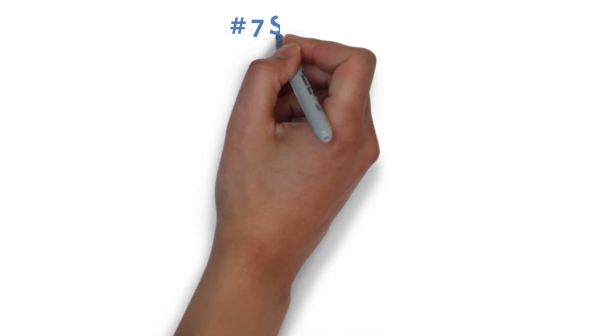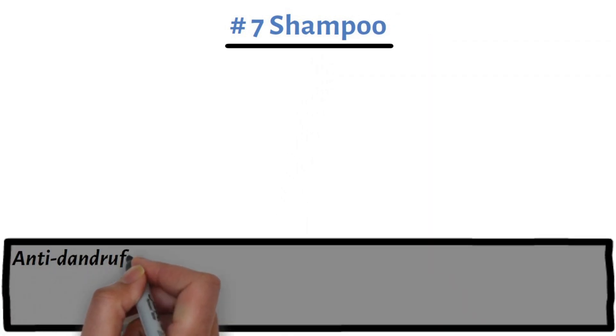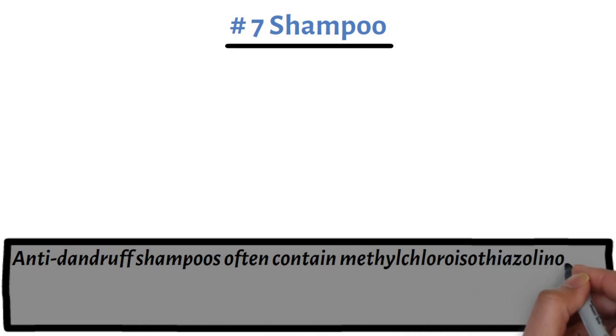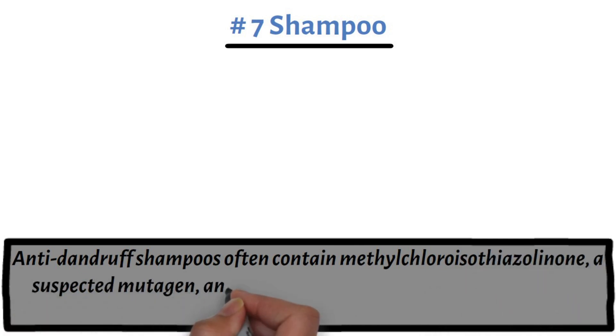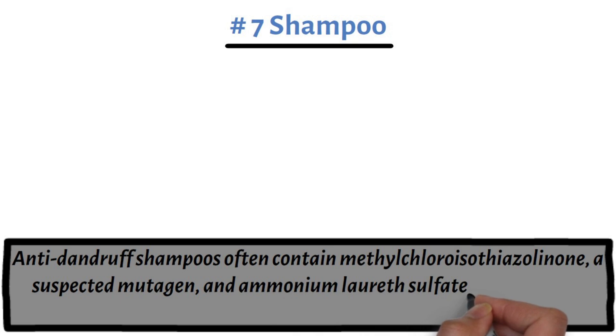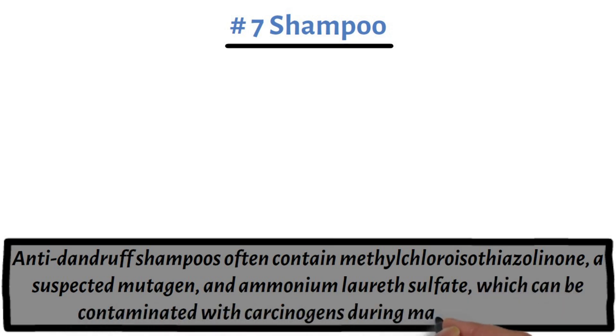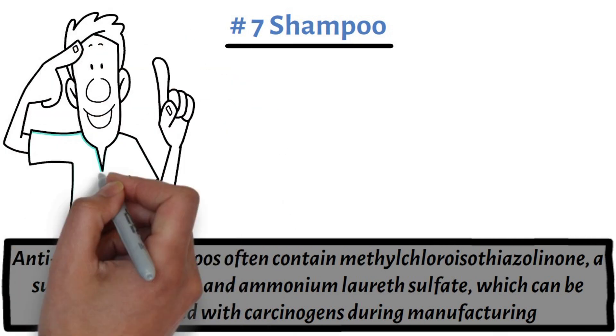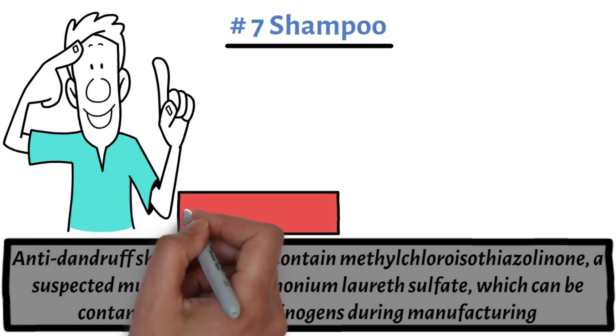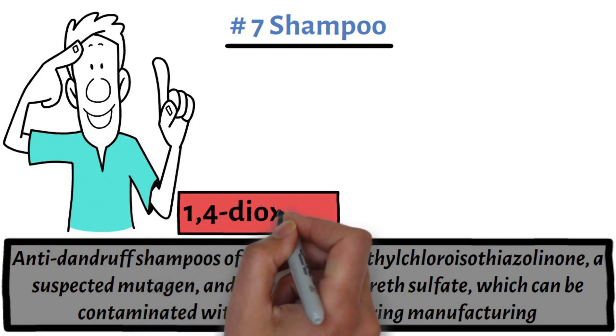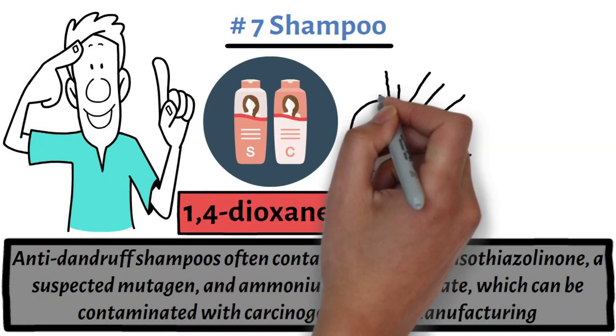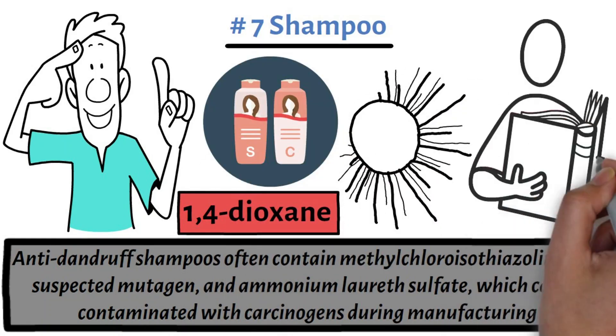Product number seven, shampoo. Anti-dandruff shampoos often contain methylchloroasothiazolinone, a suspected mutagen, and ammonium laureth sulfate, which can be contaminated with carcinogens during manufacturing. Methylchloroasothiazolinone has been linked to skin irritation and allergic reactions, while contaminants like 1,4-dioxane, found in some shampoos, have been shown to cause cancer in animal studies.